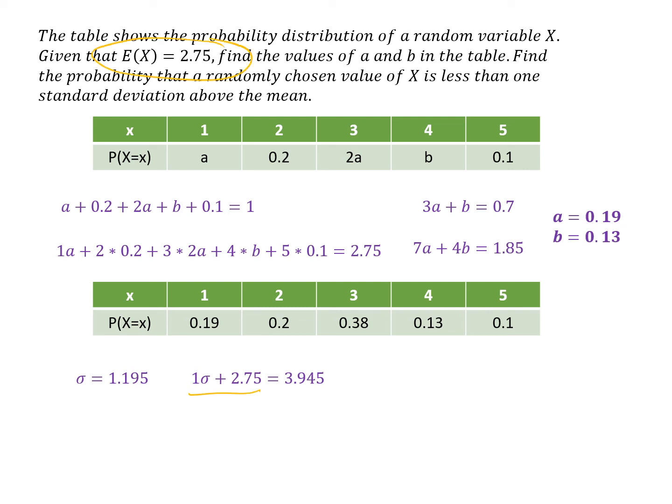The mean is the expected value of X, which we've been given. So that is 3.945. Now we want to know the probability that X is less than that number.